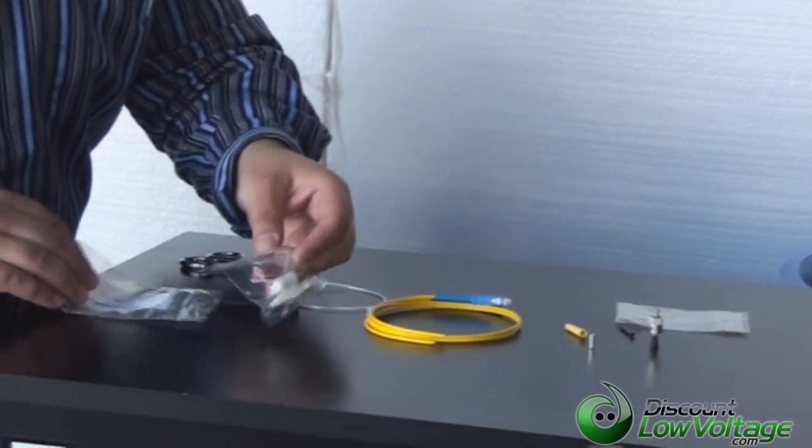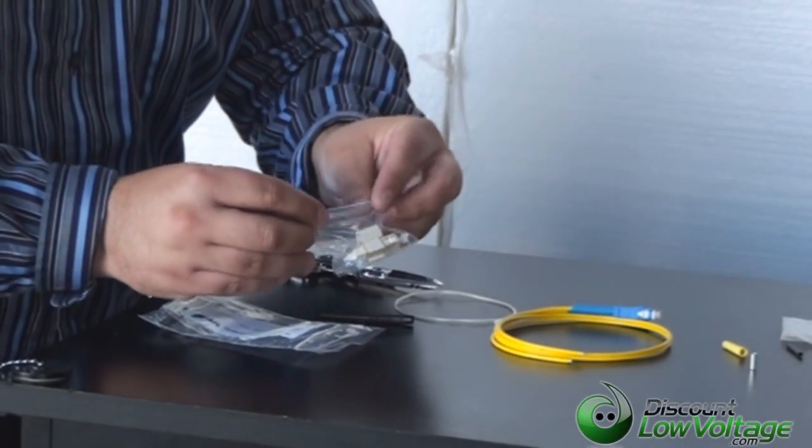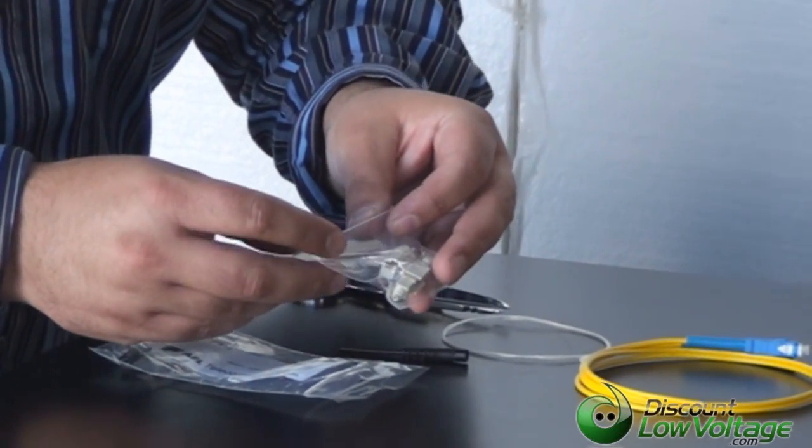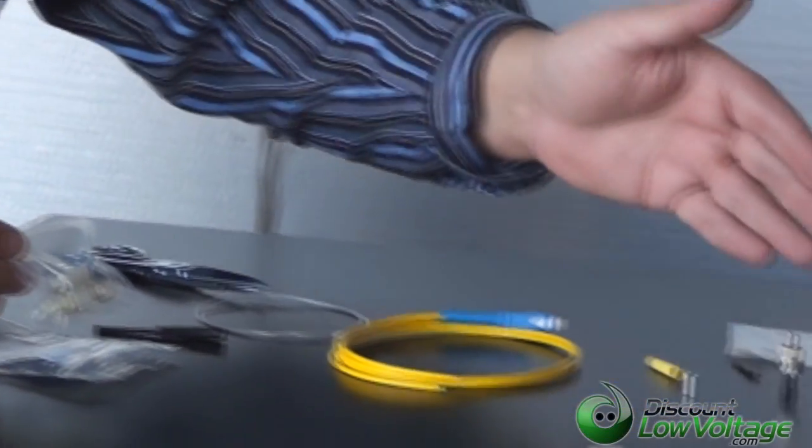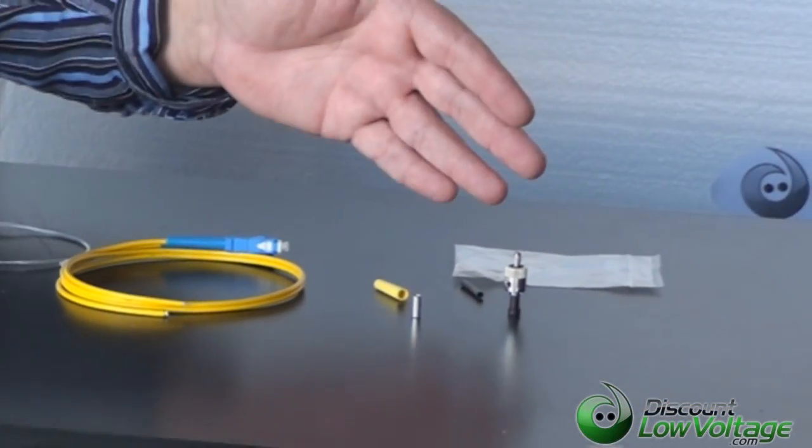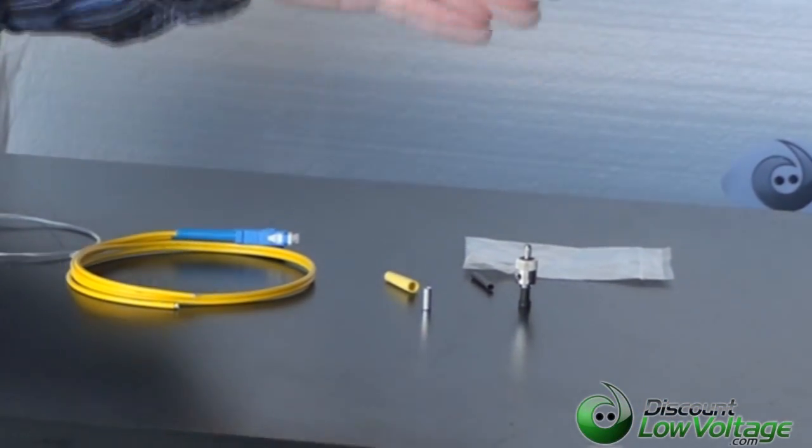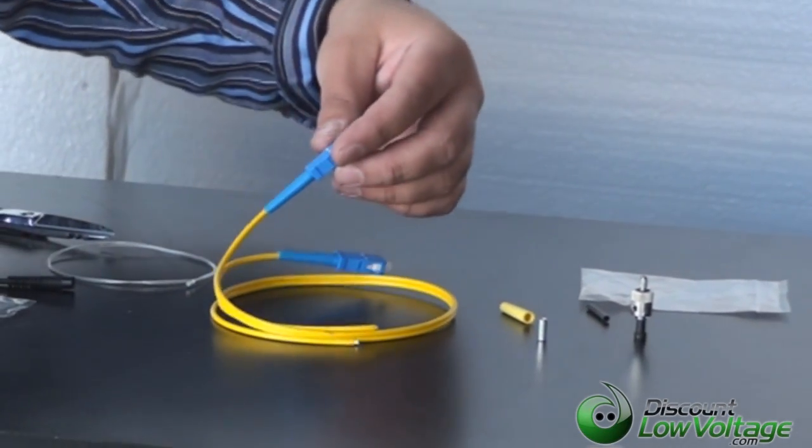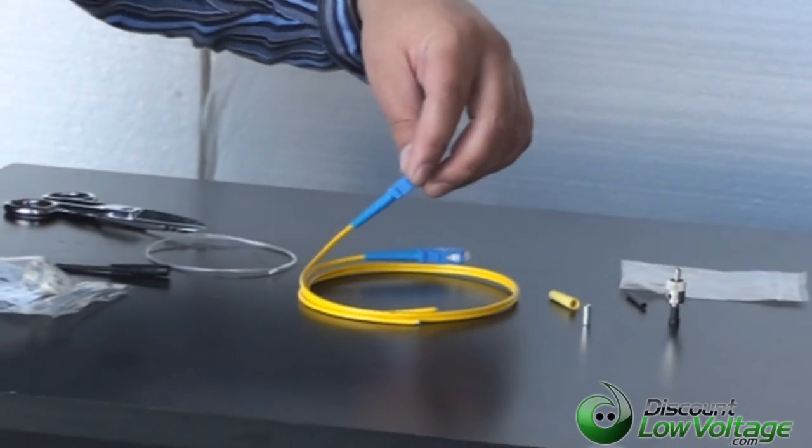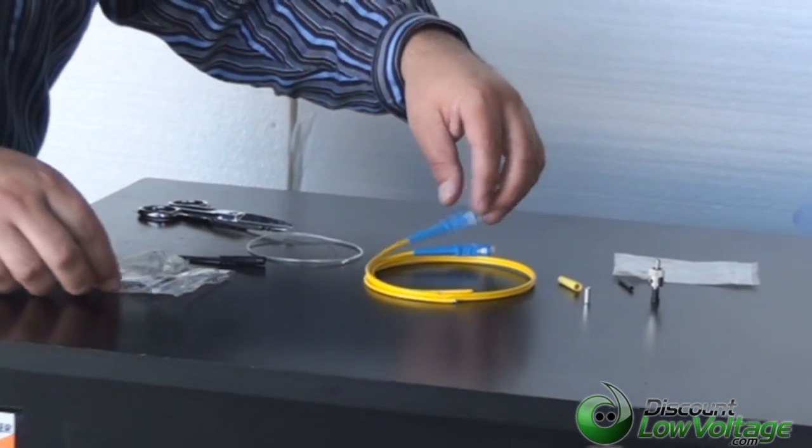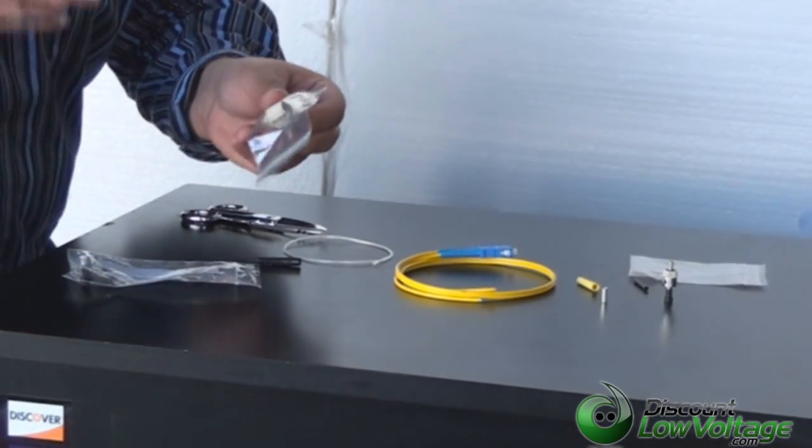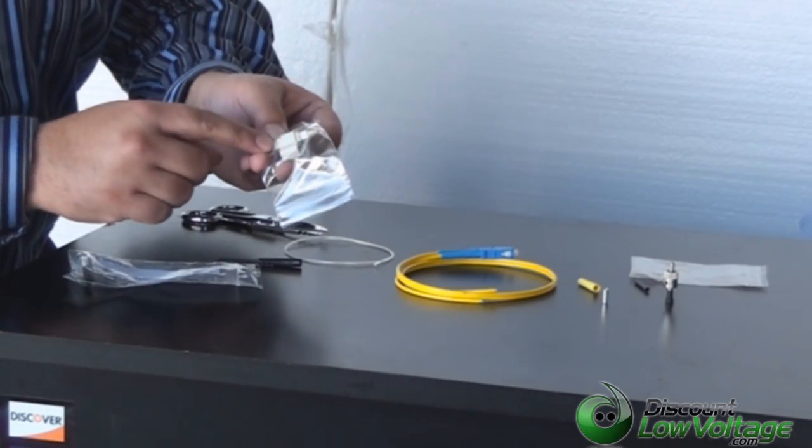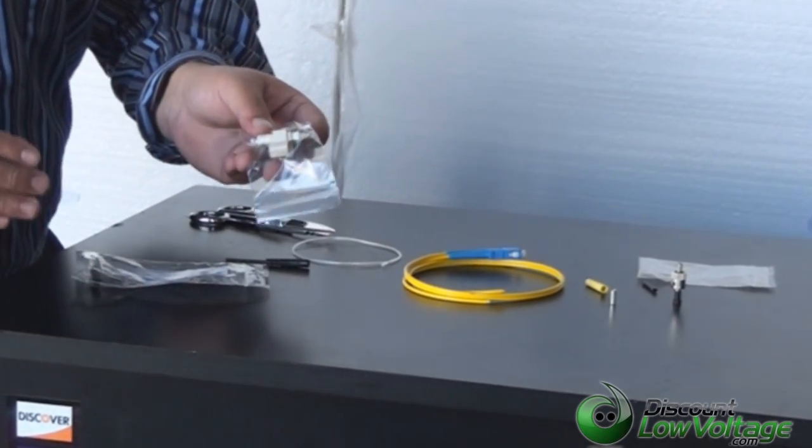The AFL connector is a very easy connector to terminate and we also have the assembly house connector which is an epoxy oven bake connector that is most commonly used on fiber optic patch cord assemblies. Now let's take a look at a different video I did with this connector showing you how this connector is terminated.